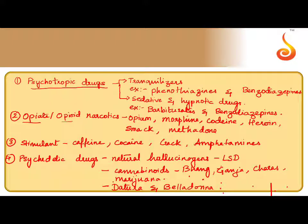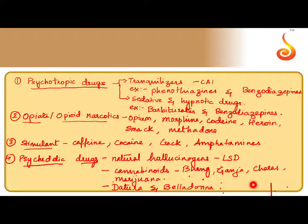The first category is opiate or opioid narcotics or drugs. Then we have stimulants and psychedelic drugs. Psychotropic drugs are broadly classified under two names: tranquilizers and sedatives. Tranquilizers such as phenothiazines and benzodiazepines are given to soothe and reduce anxiety. A sensation of calm feeling is felt — you are not very hyper, not excited, just calm and composed.